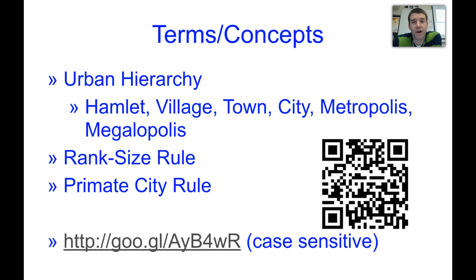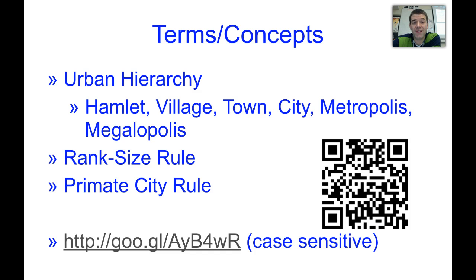To review what we've covered today: the urban hierarchy and its ladder of settlement types, the rank size rule, and the primate city rule. For tomorrow, follow the link and identify a Minnesota city, town, hamlet, or village that fits each stage of the urban hierarchy — except for the megalopolis. You'll need the hamlet, village, town, city, and metropolis, along with each settlement's population.